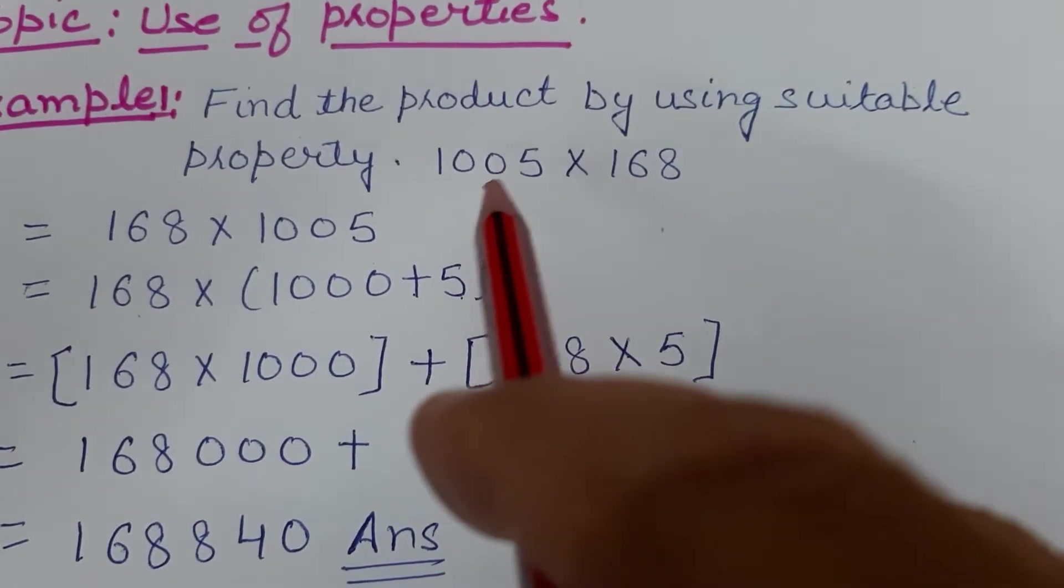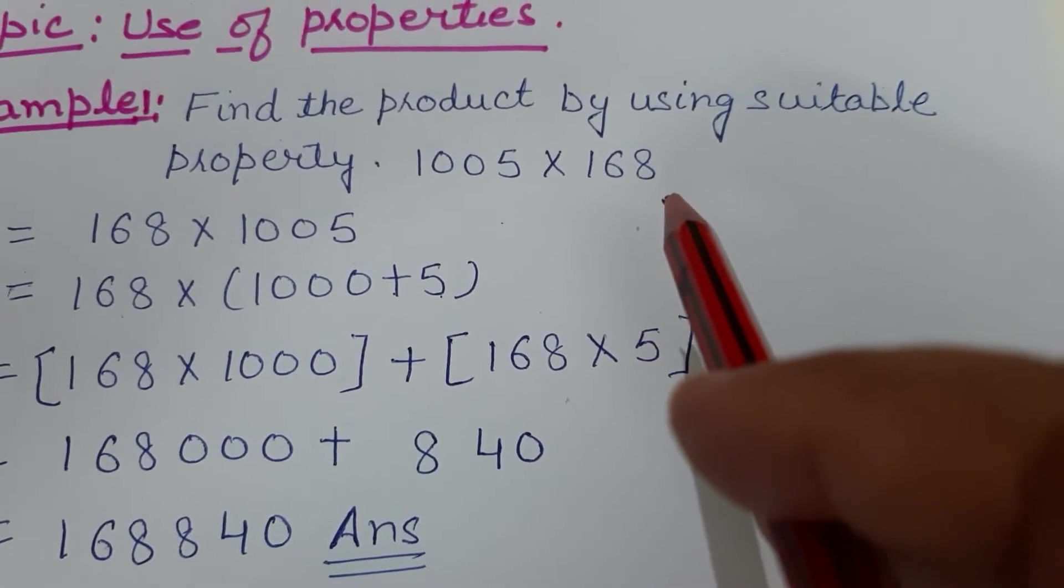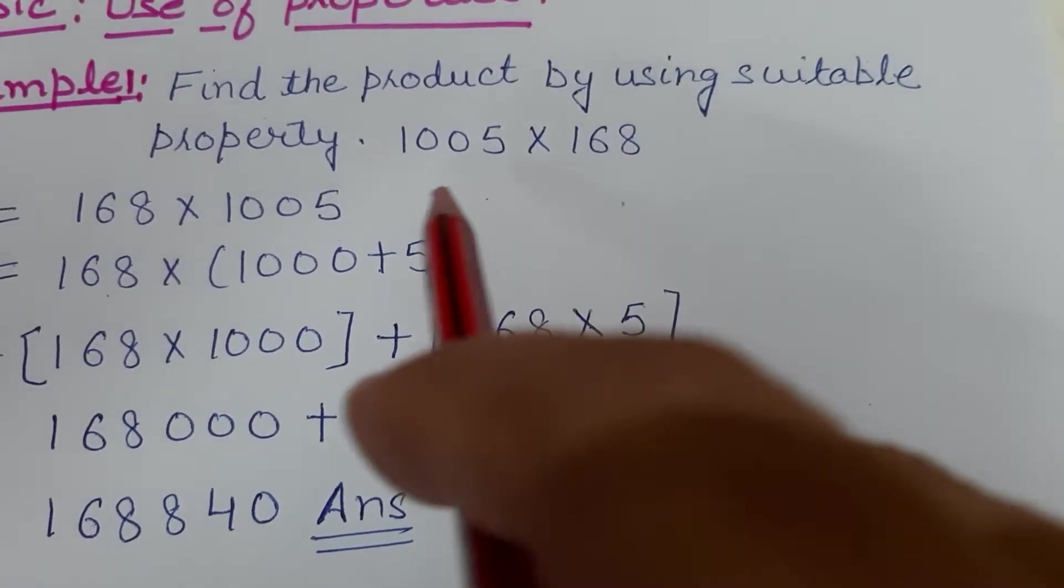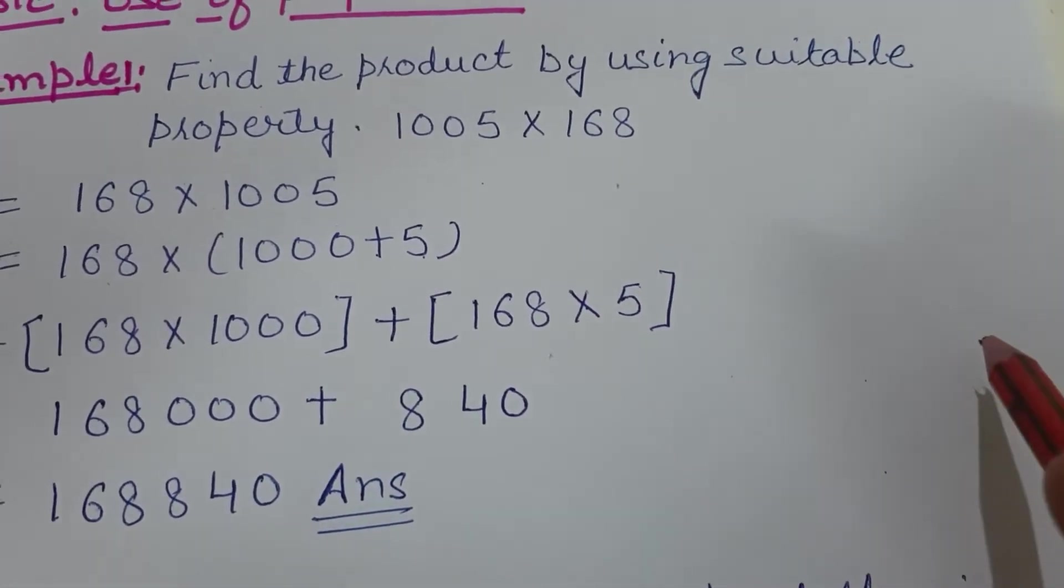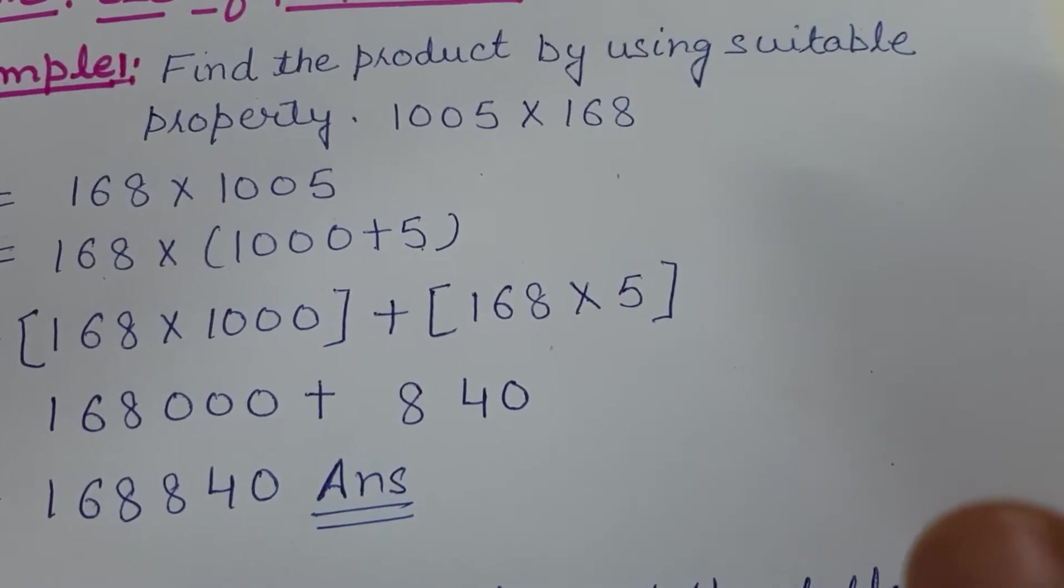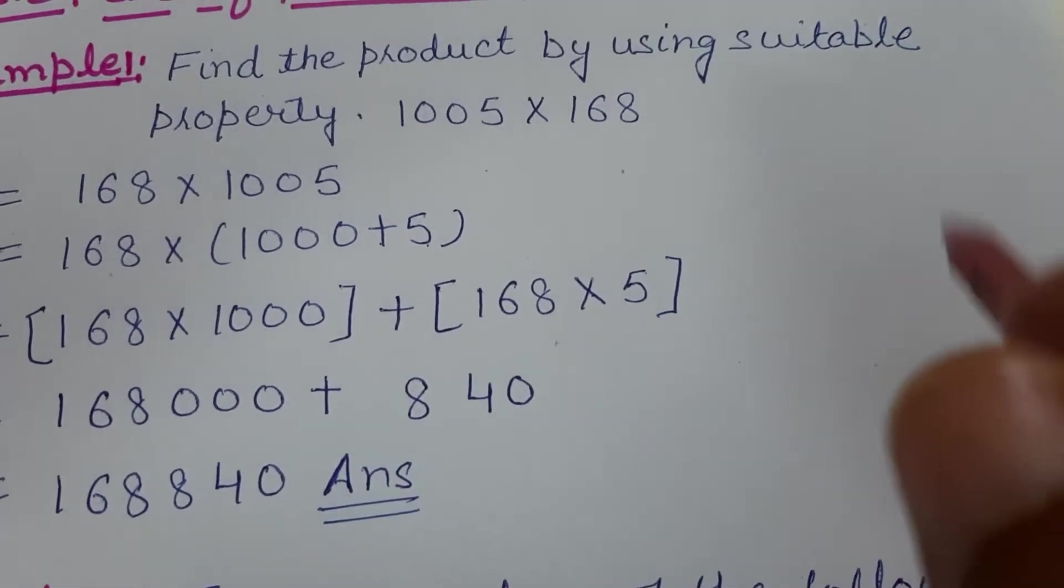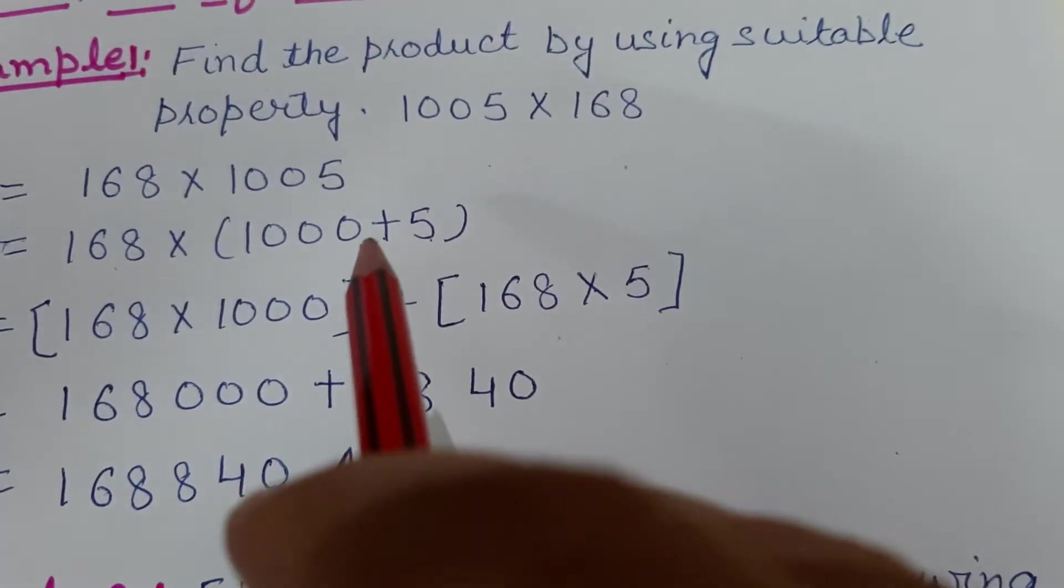The sum is 1005 multiplied by 168. Students, you can see it seems very difficult—first we would write it in columns, then find the answer. But now you will see how easily we can solve this by using distributive property.